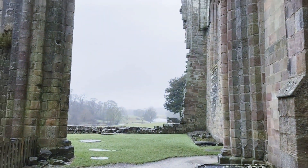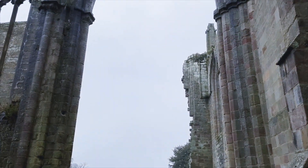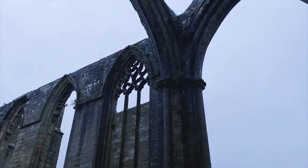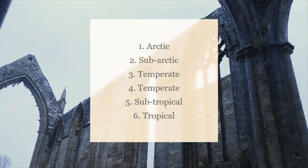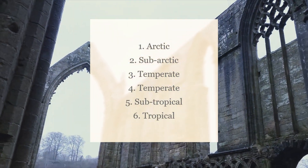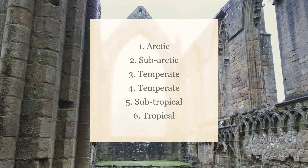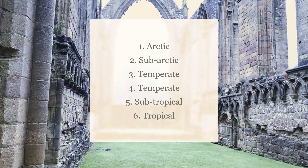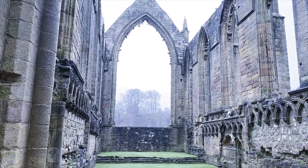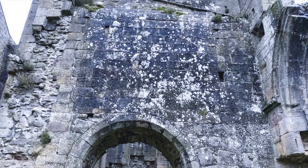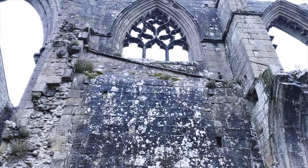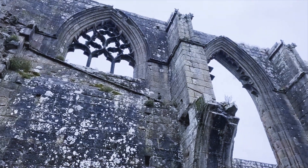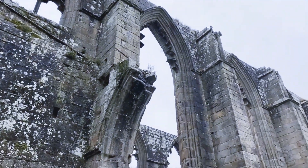Before starting a hex crawl on a new sheet of hex paper, we can first define what the predominant climate will be for the area. Just a d6 is perfect: 1 Arctic, 2 subarctic, 3 temperate, 4 also temperate, 5 subtropical, 6 tropical. Temperate is a roll of 3 or 4, which increases its chance of occurrence, as the main wandering monsters table adapted from the Dungeons and Dragons Expert rule set assumes this climate. The random wilderness terrain generation method will now need to be expanded to incorporate the different climates. To do this, I will create a separate table for each of the five climate categories.